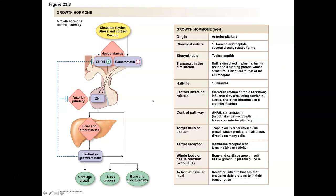Growth hormone's name tells you what it does — it promotes overall tissue and organ growth and increases protein synthesis. It also increases lipolysis, the breakdown of fats. Basically it's an anabolic hormone designed to trigger growth and development of tissues. By stimulating protein synthesis and lipolysis, it can spare glucose for other tissues and use amino acids and fats for growth in tissues affected by growth hormone.